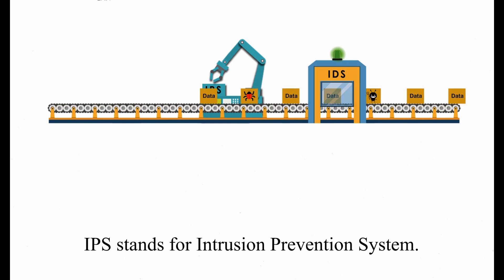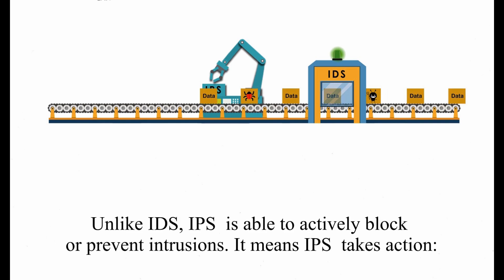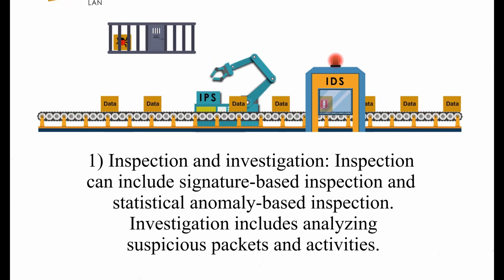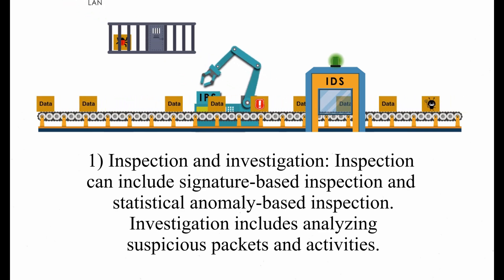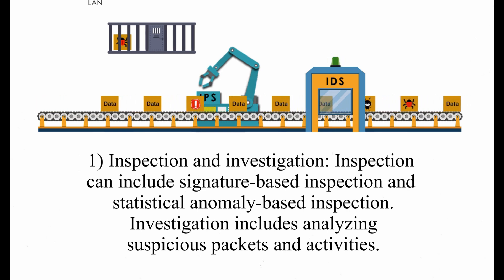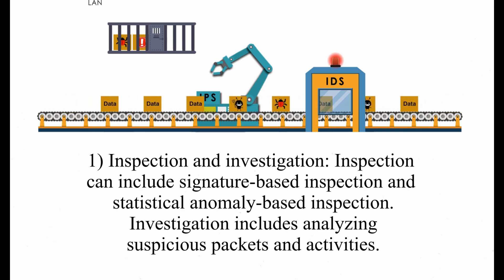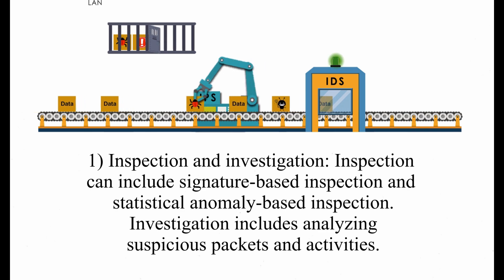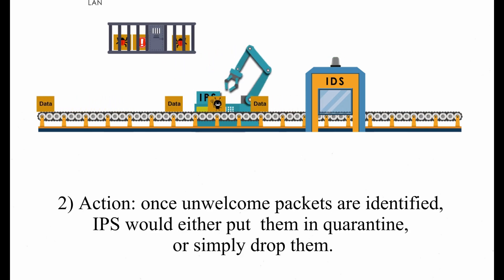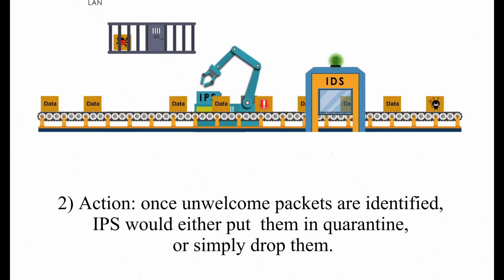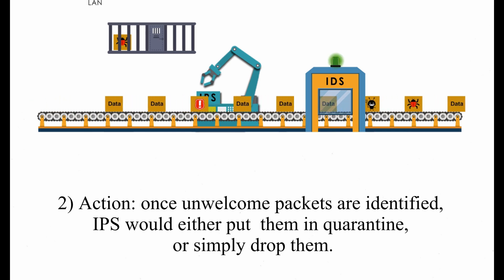IPS stands for Intrusion Prevention System. Unlike IDS, IPS is able to actively block or prevent intrusions — it means IPS takes action. One: inspection and investigation. Inspection can include signature-based inspection and statistical anomaly-based inspection. Investigation includes analyzing suspicious packets and activities. Two: action. Once unwelcomed packets are identified, IPS would either put them in quarantine or simply drop them.